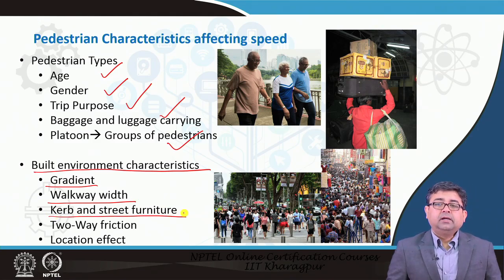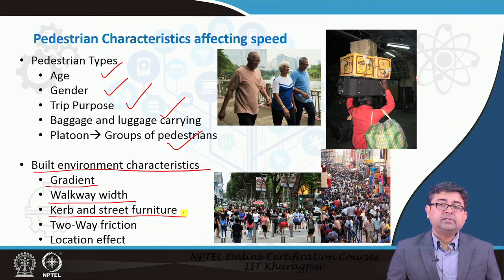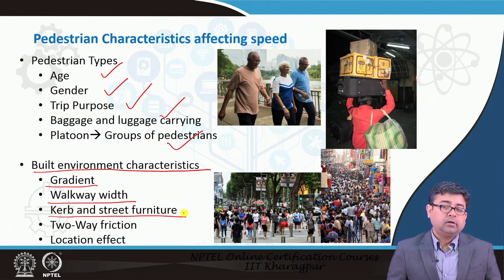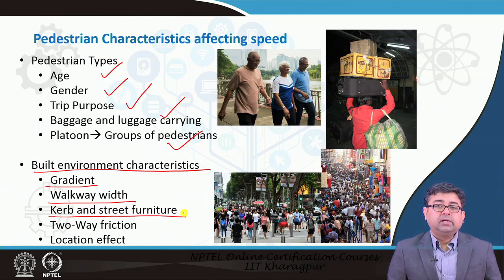The curb and street furniture also matter. Trees in between the sidewalk are a tricky situation: we do need trees for pedestrians to feel comfortable since they provide shade and are part of urban green infrastructure. But if they are right in the middle of the walking path, pedestrians have to walk around and bypass the tree, which reduces speed. This not only reduces speed but causes inconvenience to pedestrians wanting to walk the shortest distance between two points.